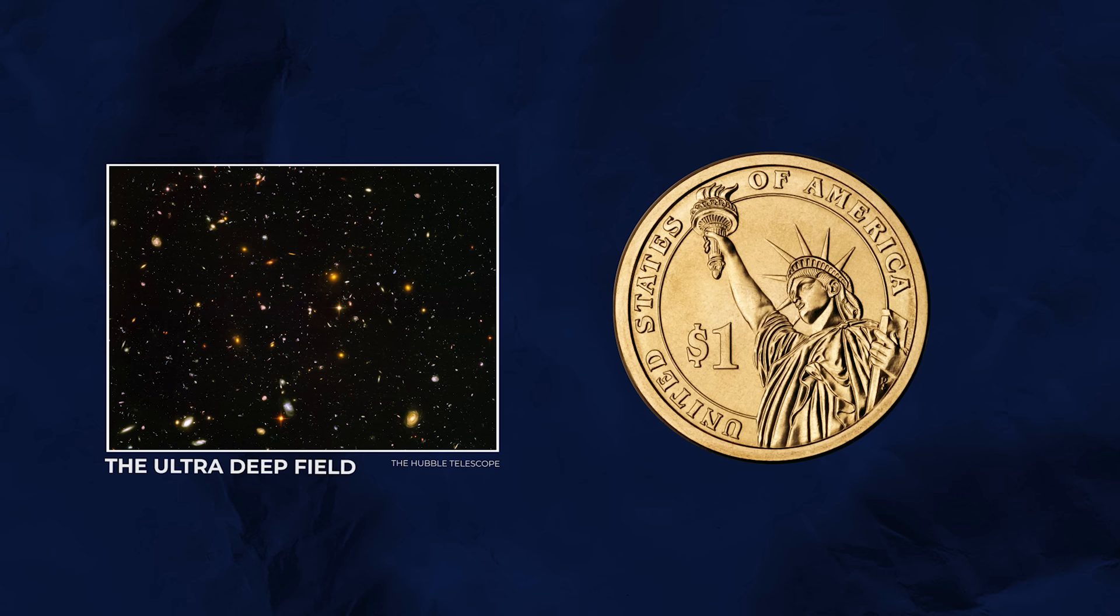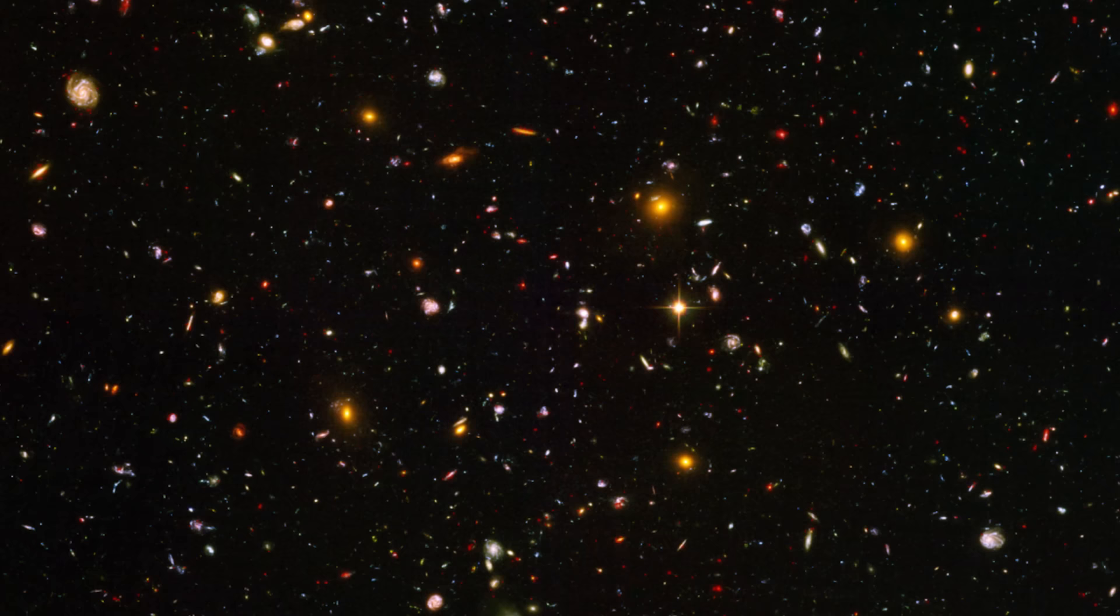It first focused on a tiny area of our night sky called the ultra-deep field. This area is the equivalent of a coin placed 18 meters away, but it features over 100,000 galaxies, many of which have gone through a large amount of redshift.